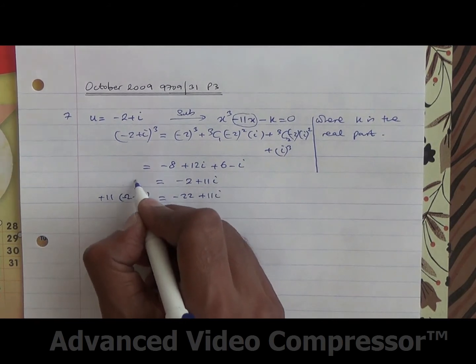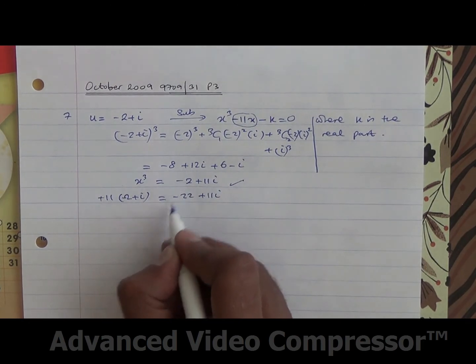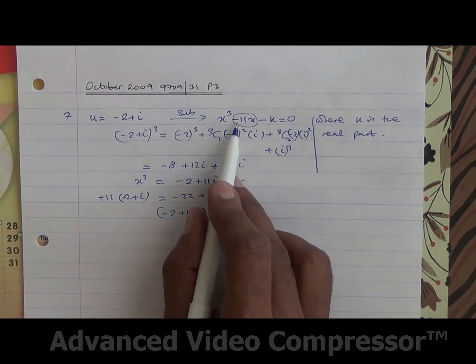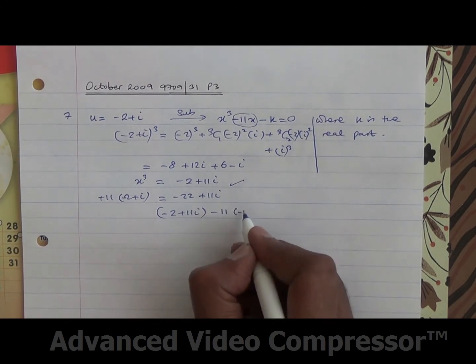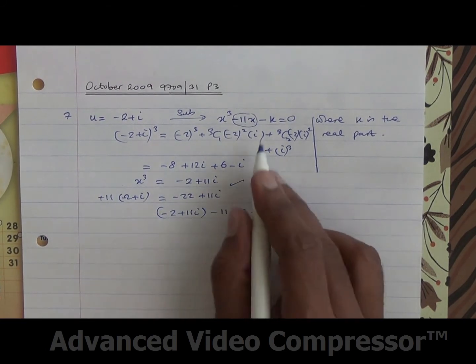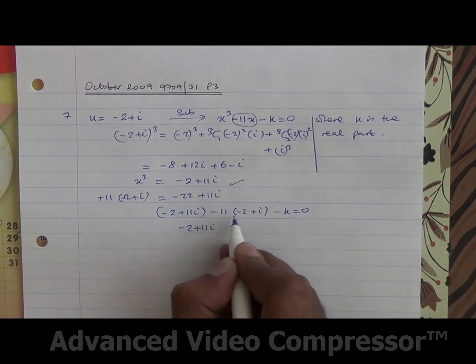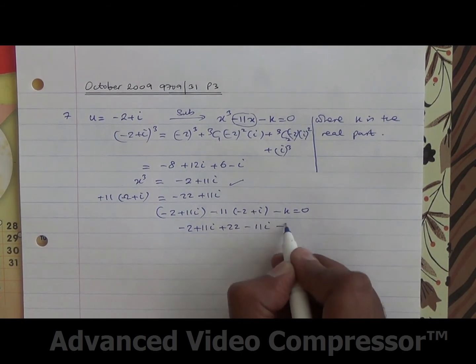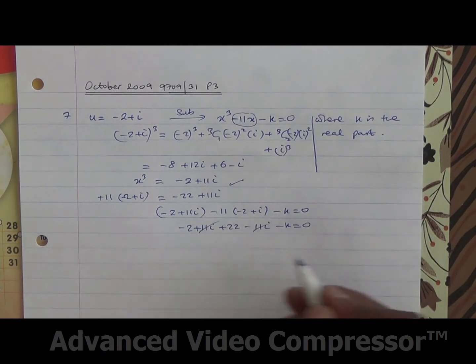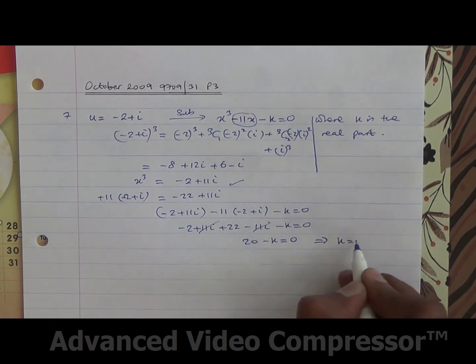So we're going to take x cube, and x cube is minus 2 plus 11i, then we have to minus 11x, minus 11 times x. That is 11 times minus 2 plus i, then minus k equals 0. So that's going to be minus 2 plus 11i, minus minus becomes plus 22, and then minus 11i, and minus k equals 0. So these two cancel out, 22 minus 2 is 20, minus k equals 0, indicating that k is going to be equal to 20.